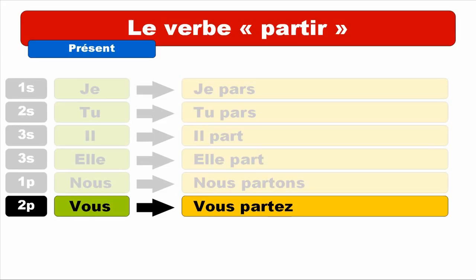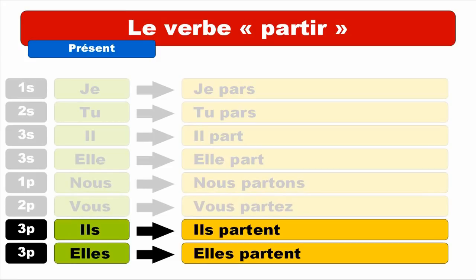And last but not least, third person of the plural — IL and ELLE. ILS PARTENT. Repeat. ILS PARTENT. Keep in mind it's a bit tricky — the final E and T is not pronounced; it only gives you the possibility to pronounce the T just before, so you get the sound PART. And then same form for ELLES — ELLES PARTENT. Repeat. ELLES PARTENT.